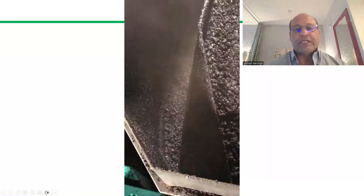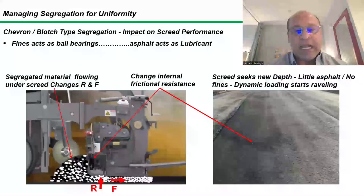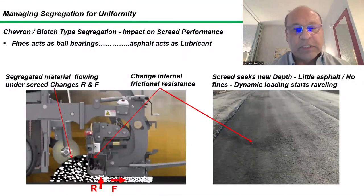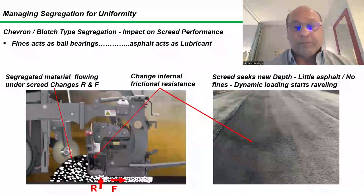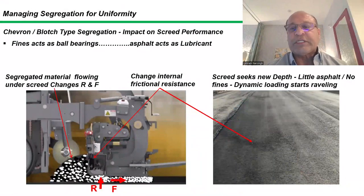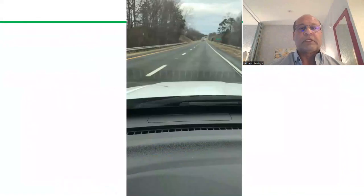So what happens when we have that segregated material flowing under the screed? It changes the internal frictional resistance of the material because we don't have the fines. Generally when we are compacting the material, the fines act as ball bearings. The asphalt acts as a lubricant for the larger stones to move and push the air pockets out. As you can see, the blemish on the right-hand picture shows that there are no fines there. So that means we change the internal frictional resistance, which means we will change the behavior of the screed. More than likely, we will have a dip there — little or no asphalt, dynamic loading, and that will start traveling.